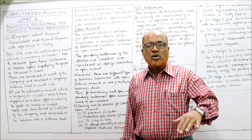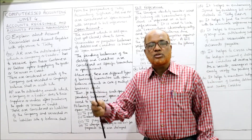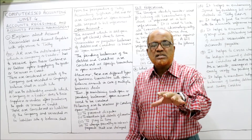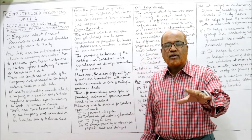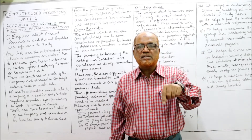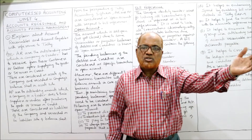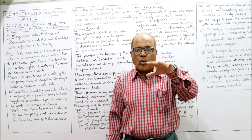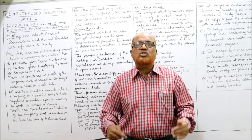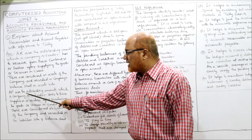Account payable is the opposite. Account payable is the amount owed by the business or trader to their suppliers or vendors for goods or services purchased on credit. Just as a business sells goods on credit to customers, it also purchases goods on credit from suppliers or vendors. The amount owed to those suppliers is called accounts payable.